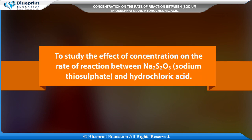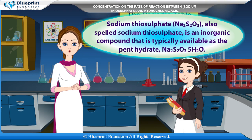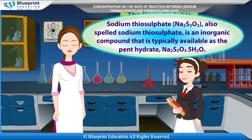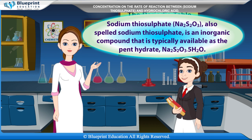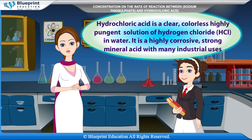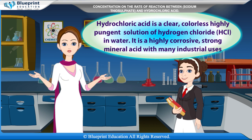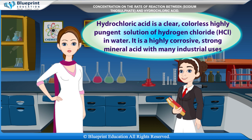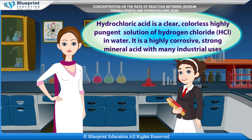To study the effect of concentration on the rate of reaction between Na2S2O3 (sodium thiosulfate) and hydrochloric acid. Sodium thiosulfate, Na2S2O3, is an inorganic compound typically available as the pentahydrate Na2S2O3·5H2O. Hydrochloric acid is a clear, colorless, highly pungent solution of hydrogen chloride (HCl) in water. It is a highly corrosive, strong mineral acid with many industrial uses.